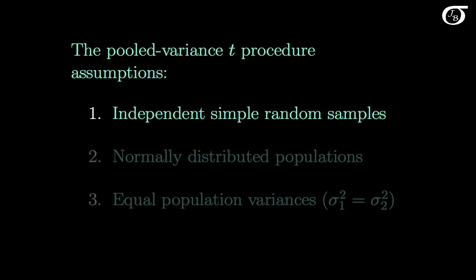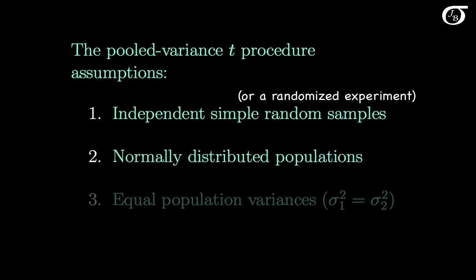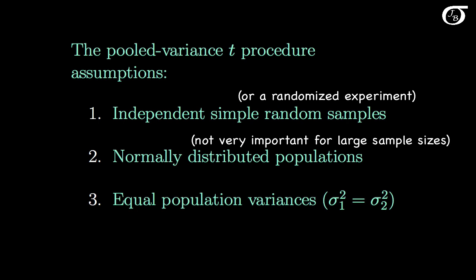In order for the pooled variance t procedures to be valid, we're going to need to assume a few things. First, we need independent simple random samples from the populations of interest, or the method works for randomized experiments as well. We also need normally distributed populations, but this assumption is not very important if we have large sample sizes. And here we also assume equal population variances — that the population variance of group 1 equals that of group 2, and let's call that common variance sigma squared.